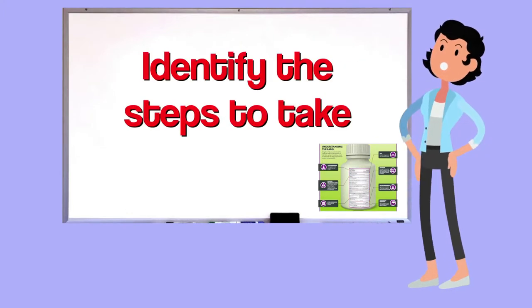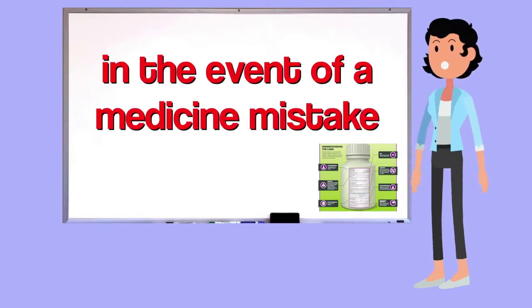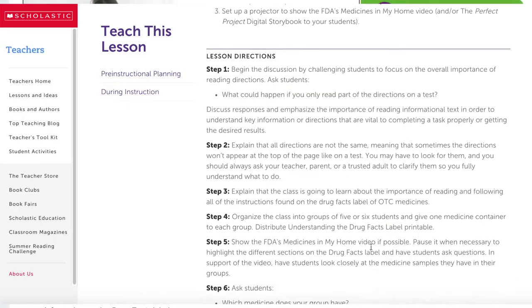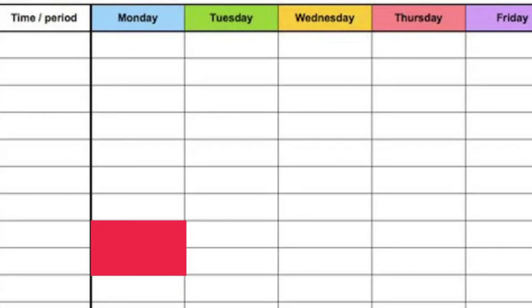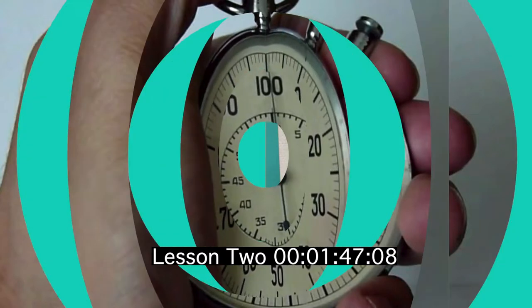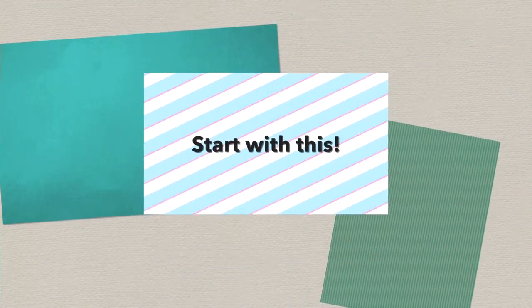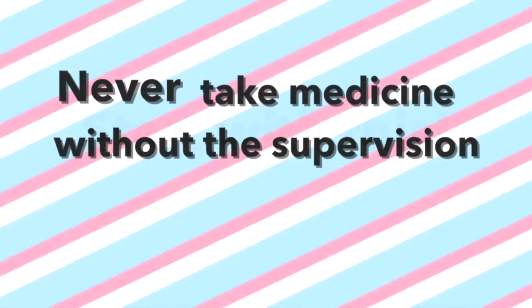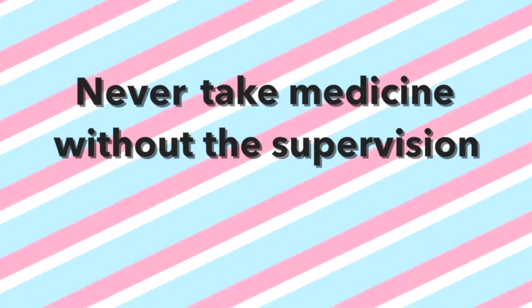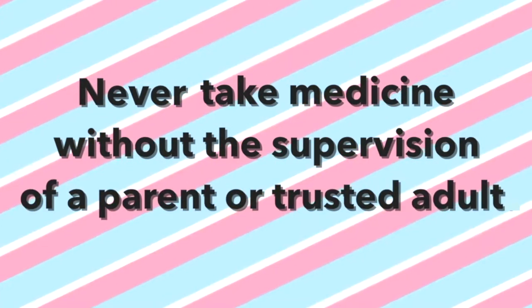Learn the potential consequences of not reading and understanding all of the information, and identify the steps to take in the event of a medicine mistake. The lesson plan is created to fit two 40-minute class periods, so be sure to schedule double the time. Before every lesson, remind students they should never take medicine without the supervision of a parent or trusted adult.